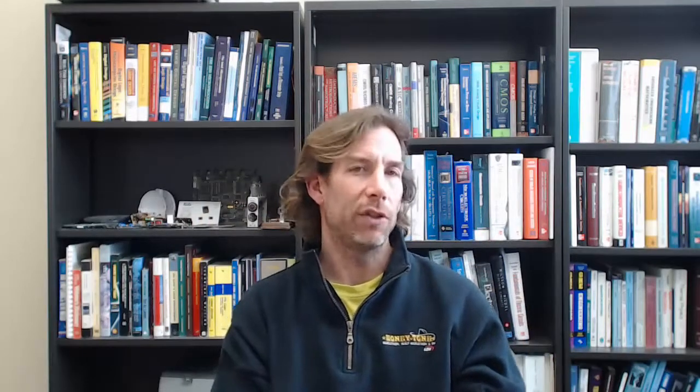when I go around in the direction of the arrow, I go from a negative to a positive, I will call that a voltage increase and write it as a positive voltage in the equation. If I go from a positive to a negative, I will call that a voltage decrease and write it as a negative voltage in the equation.